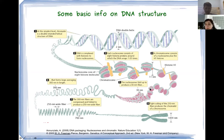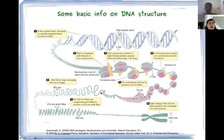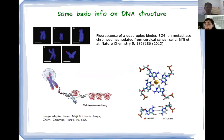These nucleosome core particles group together in a fiber of larger size, which again aggregates into a higher-order structure, forming loops and finally reaching the shape of the chromosomes in our cell. Not all the DNA in our cell, by the way, is DNA duplex.